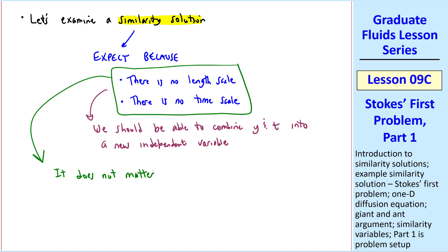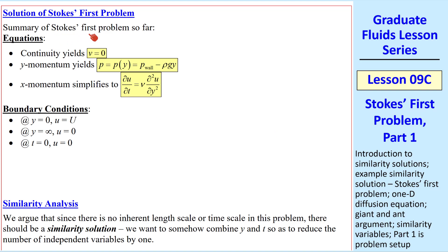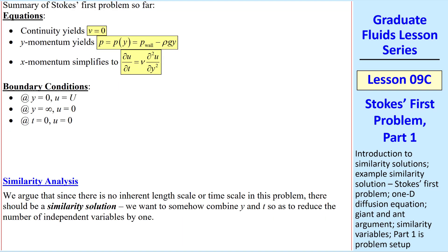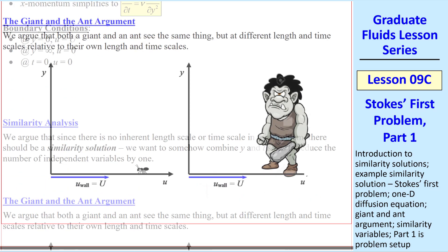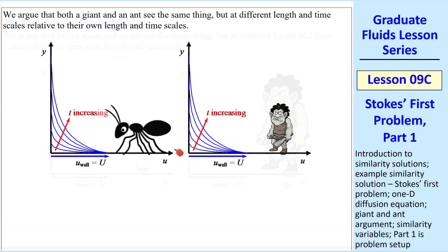An easier way to think about this is that it does not matter how close or how far you are from the wall — you should see a similar event. This leads to what I like to call the giant and the ant argument. Both a tiny ant and a huge giant see exactly the same flow, but they have very different length and time scales. If we make them about the same size, both will see the same progression of flow, from no flow to velocity profiles that grow over time. The ant sees this happening very rapidly in a short height; the giant sees it more slowly at a much bigger height.